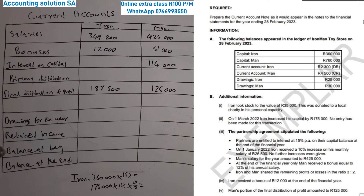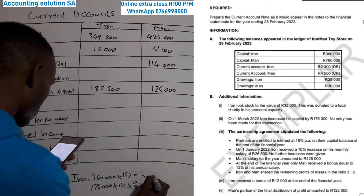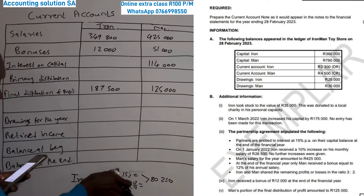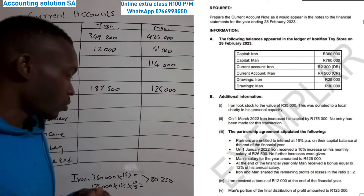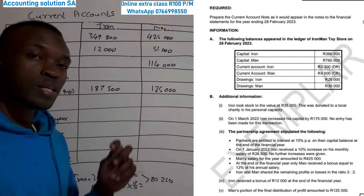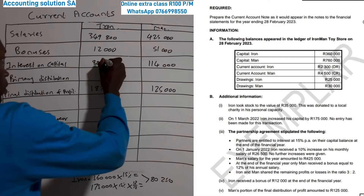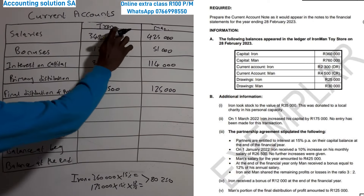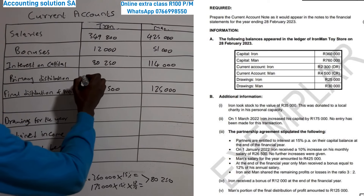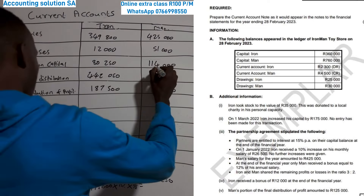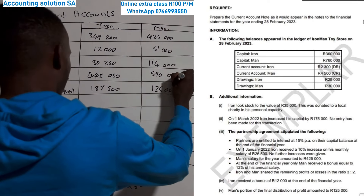When you do all those calculations, the total interest on capital for Iron is 80 250. You can do them separately or together since the months are the same, but I don't encourage doing them together in case the contribution was made mid-year. After that, you add salary, bonus, and interest on capital together to get the primary distribution: Iron's side gives 442 050 and Men's side gives 590 000.